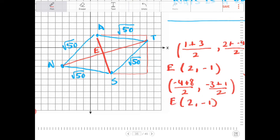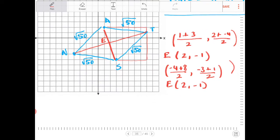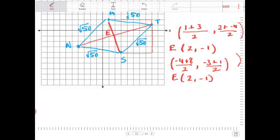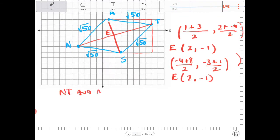Here, what I'm doing is I'm showing that point E, all right, the midpoint, we're bisecting the diagonals here. So N-T and A-S share the same midpoint. So N-T and A-S bisect each other.